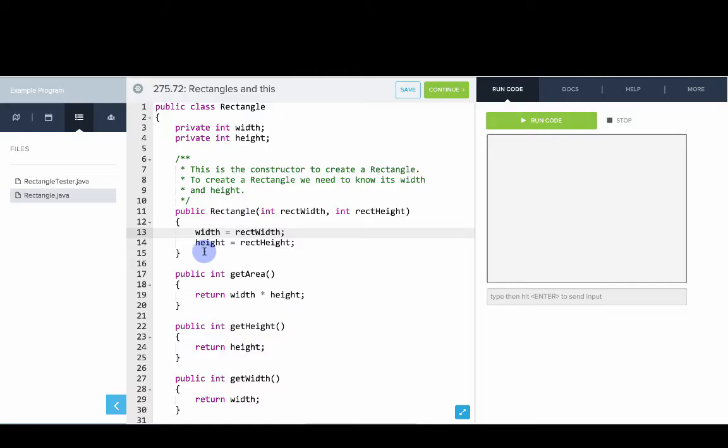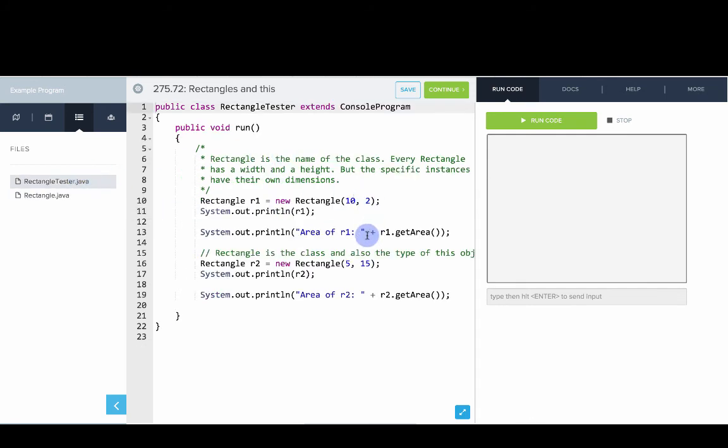Let's go try this out in the editor. Okay, so I have our rectangle class from earlier, and the first thing I want to do is show you the program. We make a couple rectangles, call the getArea method.